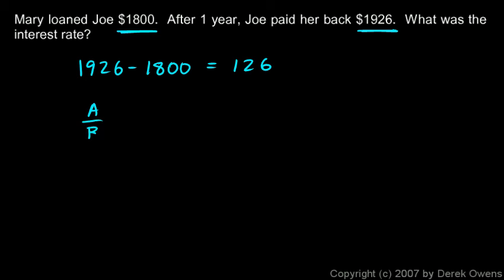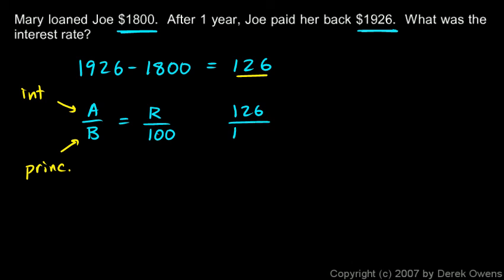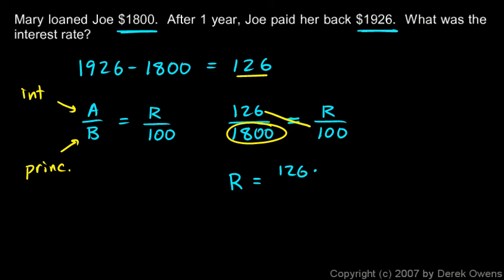Using the percent proportion — a over b equals r over one hundred — the amount is the interest: $126. The base is the principal, the total amount of the loan: $1800. So: 126 over 1800 equals r over 100. To solve for r, multiply 126 by 100 and divide by 1800. Crossing out the zeros, the calculation becomes 126 over 18, which comes out to 7. So the interest rate is seven percent.